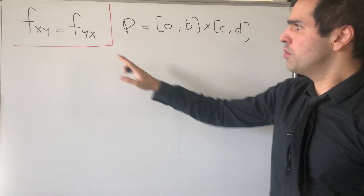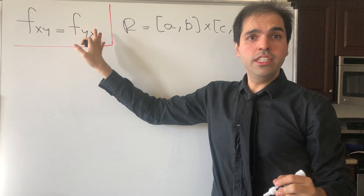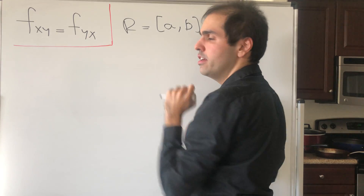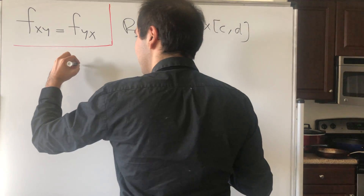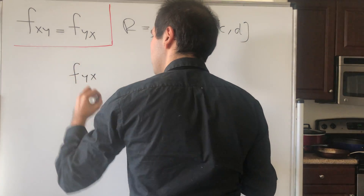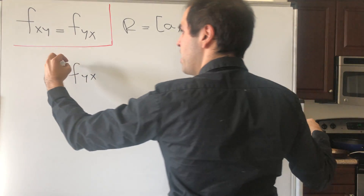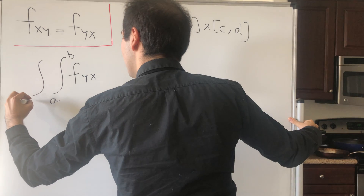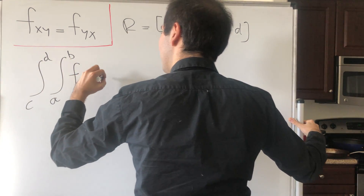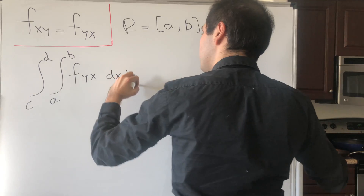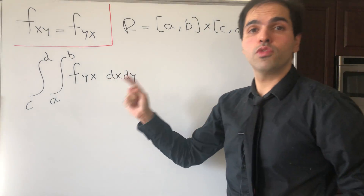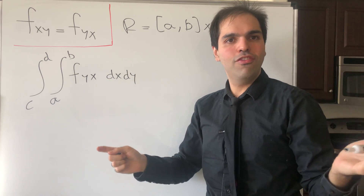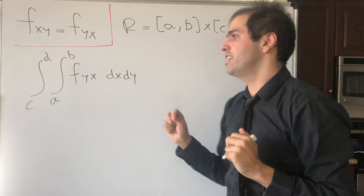What we would like to do is integrate both of those functions over this arbitrary rectangle. So let's start with f_yx. Let's integrate it: the integral from a to b, integral from c to d, of f_yx dx dy. Here's one instance where you need continuity, because if a function is continuous, you can integrate this.